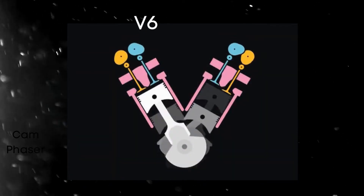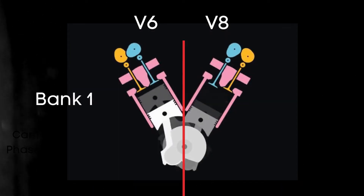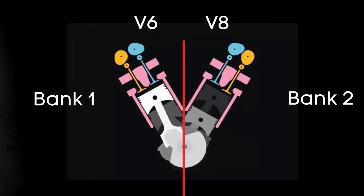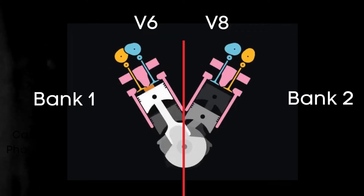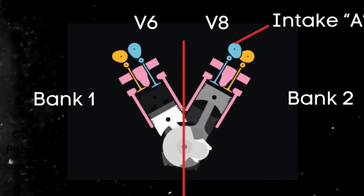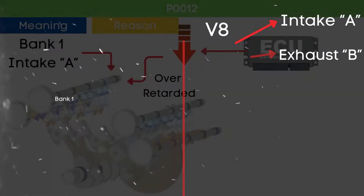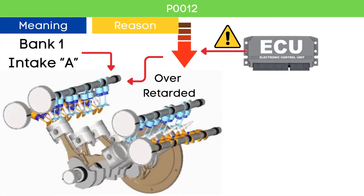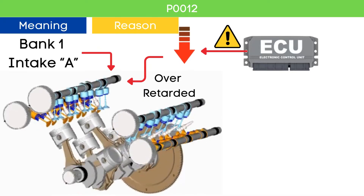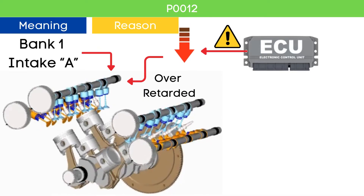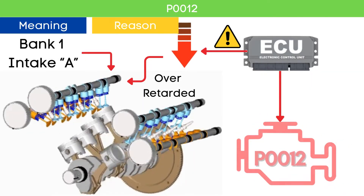In the case of V6 or V8 engines, there are two camshafts: Bank 1 and Bank 2. For dual overhead camshaft, DOHC engines, there are two camshafts per bank — intake and exhaust. When the ECU detects that the Bank 1 intake camshaft position is over-retarded compared to the targeted cam angle, it triggers the P0012 code.